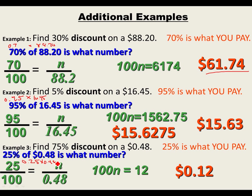Don't forget the decimal places. If you put in 70 times 88.20 instead of 0.70, your answer is going to be $6,174 — that would be a great discount, but it's not right.